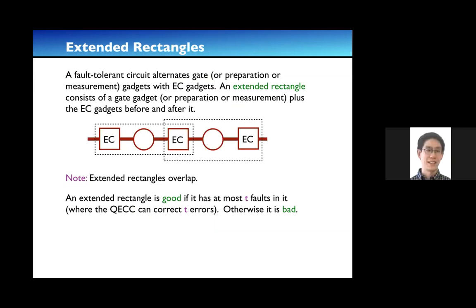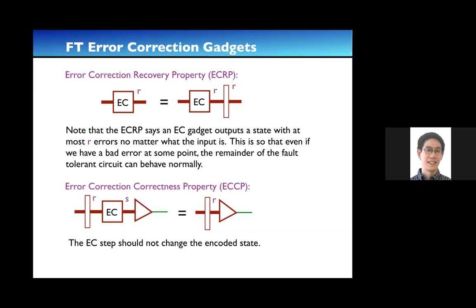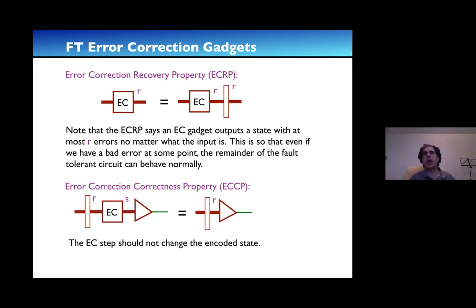A question was raised about flag fault tolerance, where the error correction operator raises a flag when it fails so you can pop the error up to another level like concatenation. This language doesn't capture that — it was designed for the most basic, oldest fault-tolerant procedures. That sort of thing is what I hope to capture with my work in progress, but it doesn't dramatically change the language.